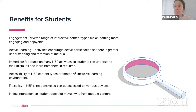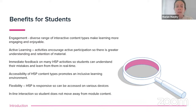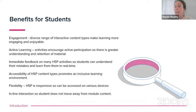So what are the benefits of H5P for students? Firstly, engagement is one of the main benefits in that there is a diverse range of H5P content types that will help to make learning more enjoyable and interactive for students. Active learning is a feature where students are actively participating in their own learning, creating greater understanding and retention of material. On a specific activity, students will get immediate feedback so they can understand their mistakes and learn from them in real time. The H5P content types are accessible, promoting an inclusive learning environment. They're flexible and responsive, accessible on various devices. And another main benefit is inline interaction — the student doesn't have to leave the module content to engage in the H5P activities.